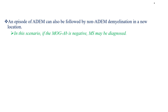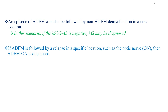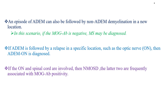An episode of ADEM can also be followed by non-ADEM demyelination in a new location. In this scenario, if the MOG antibody is negative, multiple sclerosis might be diagnosed. If ADEM is followed by relapse in a specific location such as the optic nerve, then ADEM-optic neuritis is diagnosed. If the optic nerve and spinal cord are involved, then Neuromyelitis Optica Spectrum Disorder (NMOSD) is diagnosed, and the latter two are frequently associated with MOG antibody positivity.